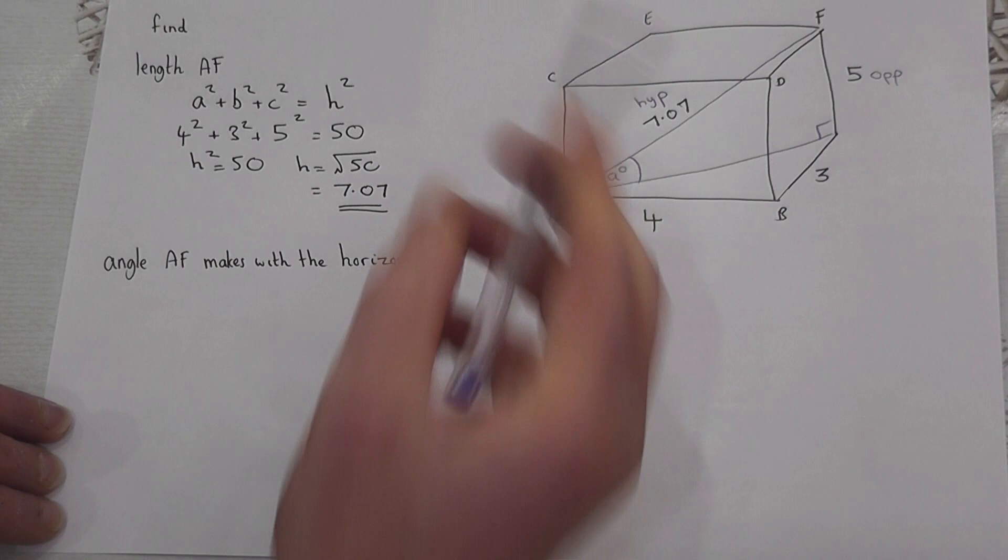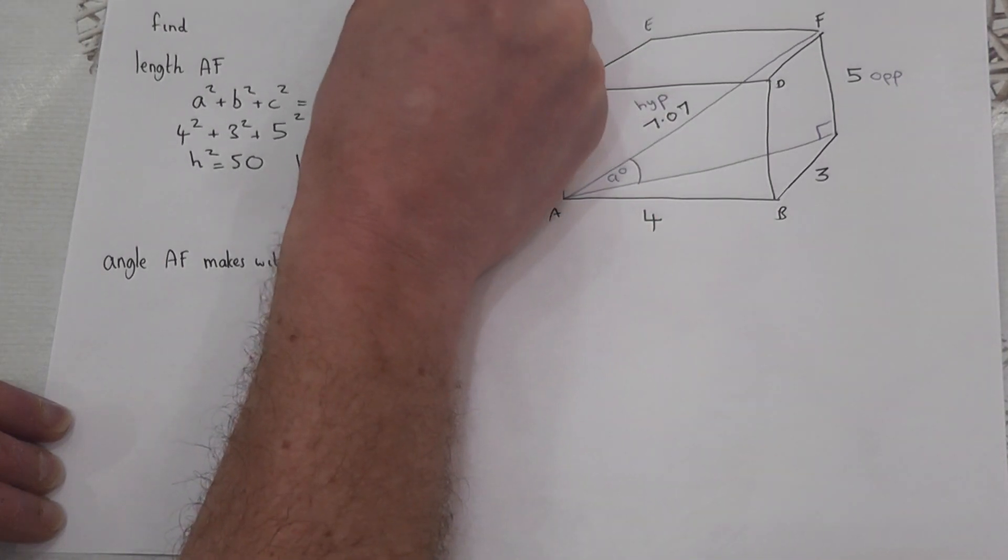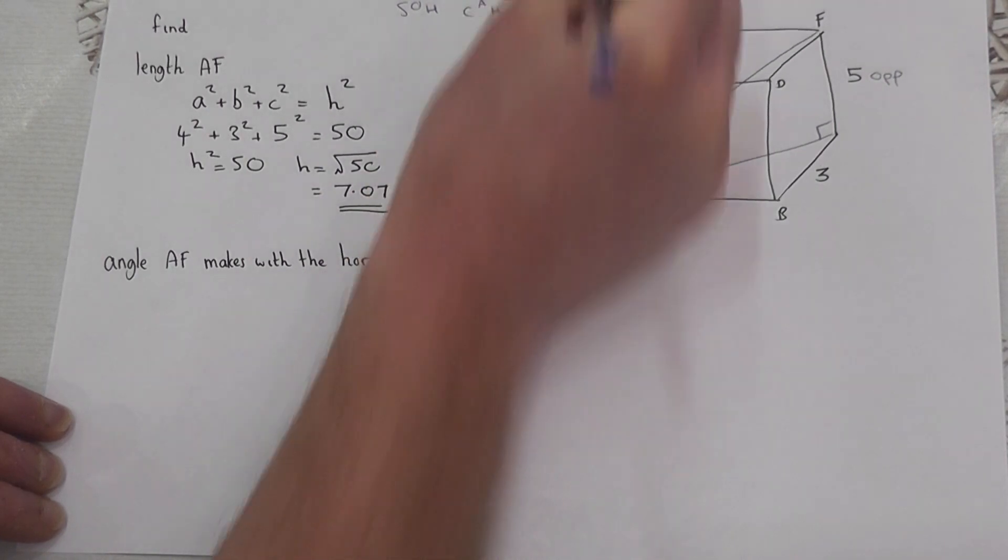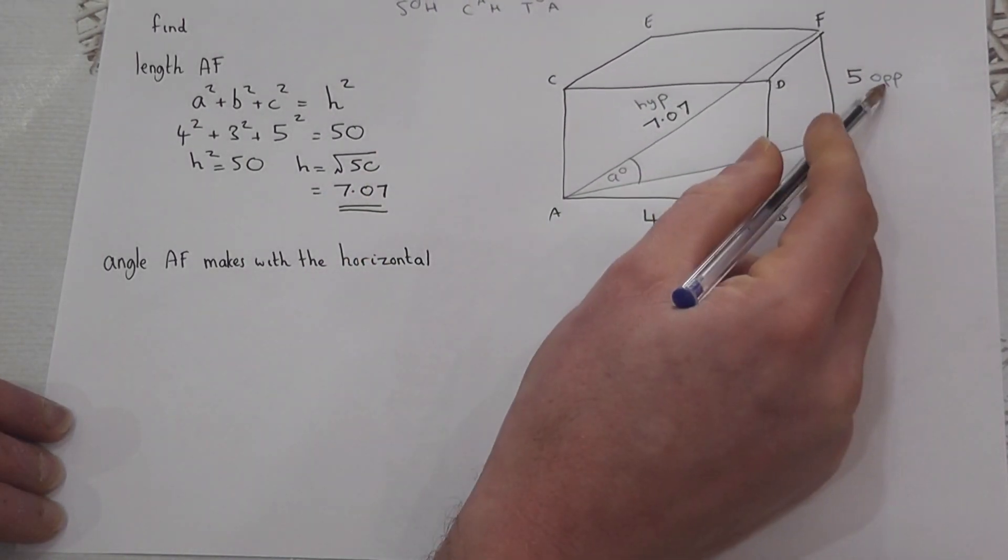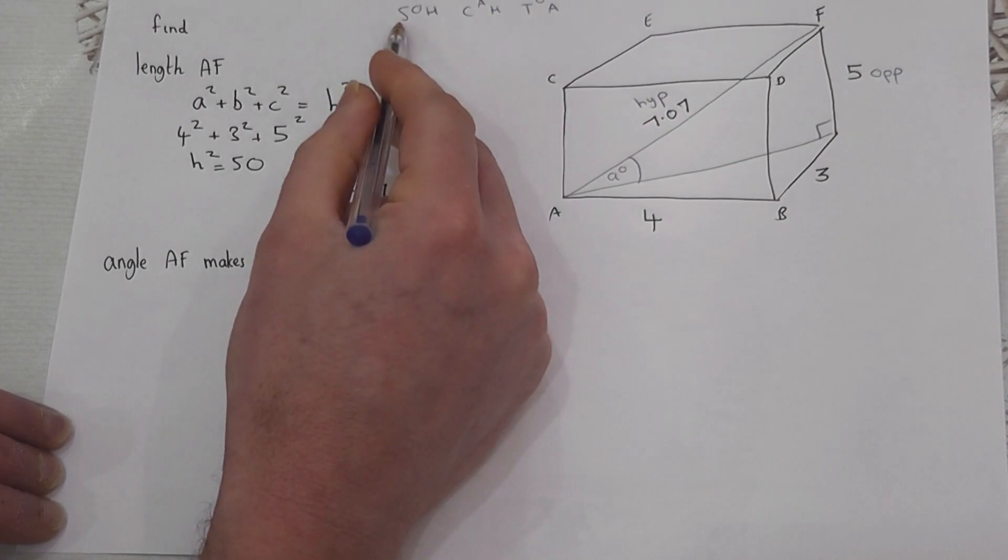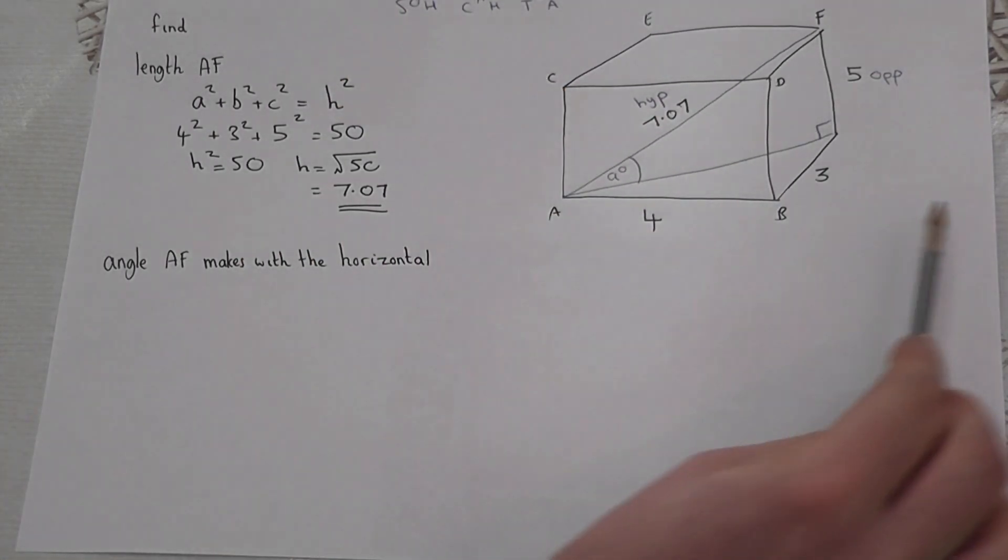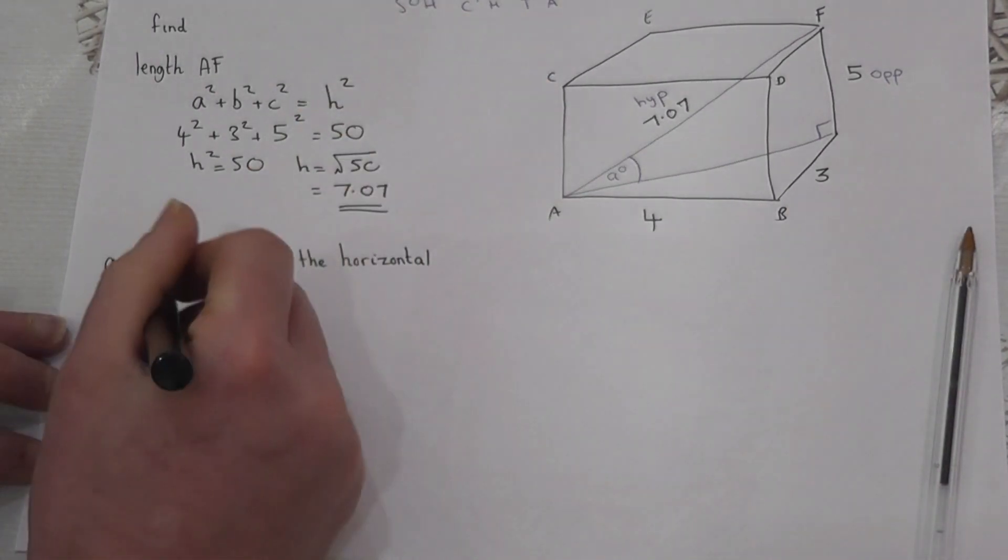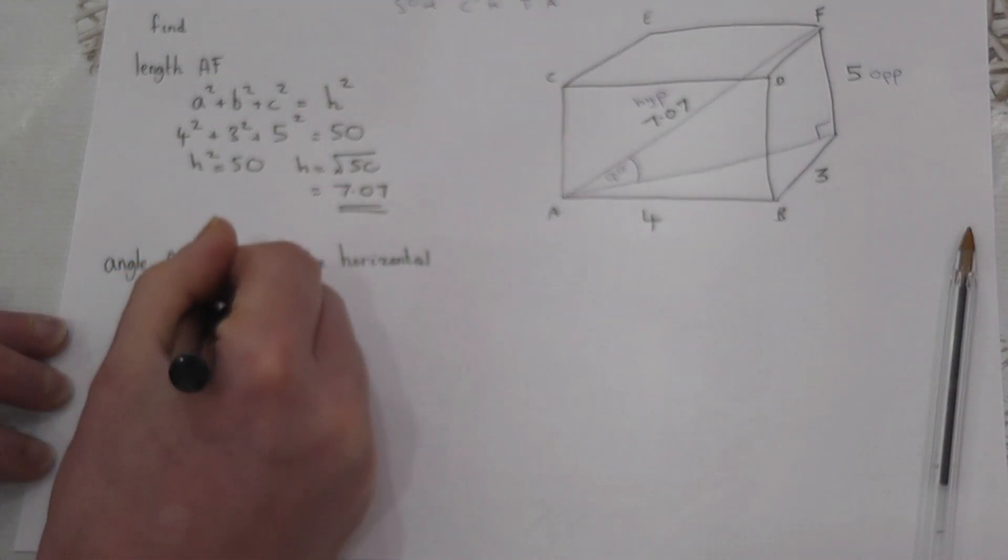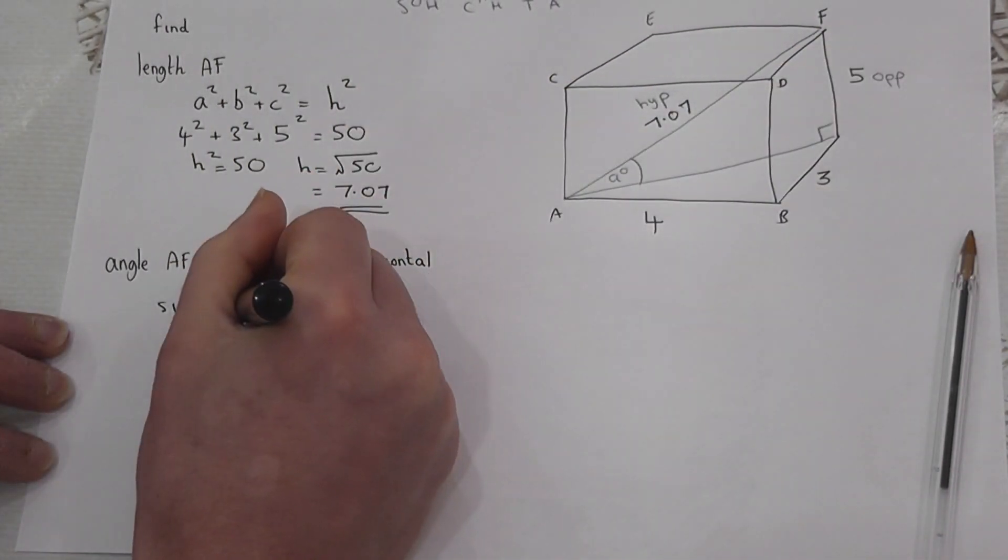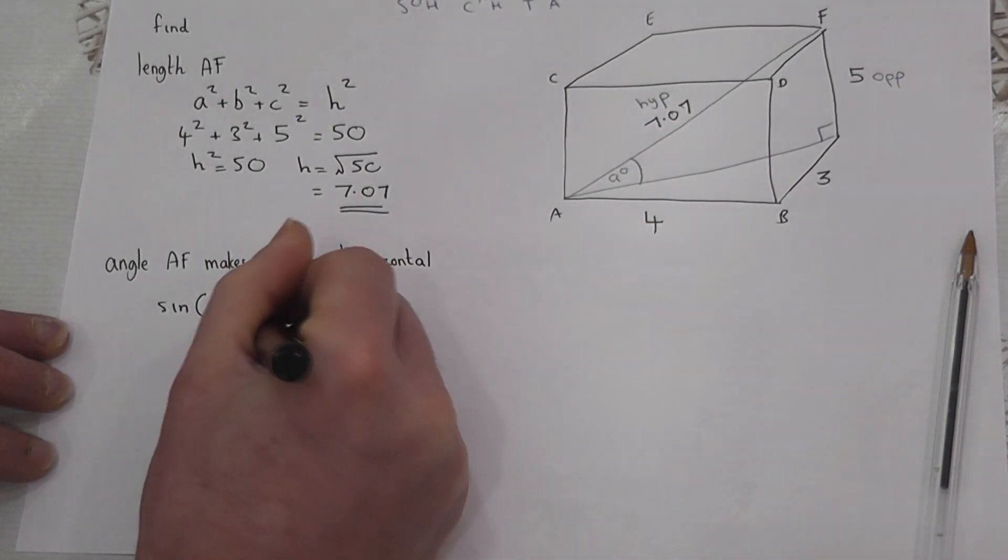And what SOH CAH TOA tells us is that if I know the opposite and hypotenuse, I can use sine to find the angle. So sin of this angle equals the opposite divided by the hypotenuse.